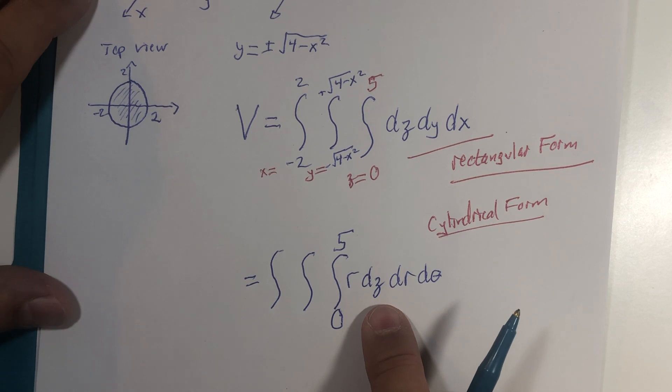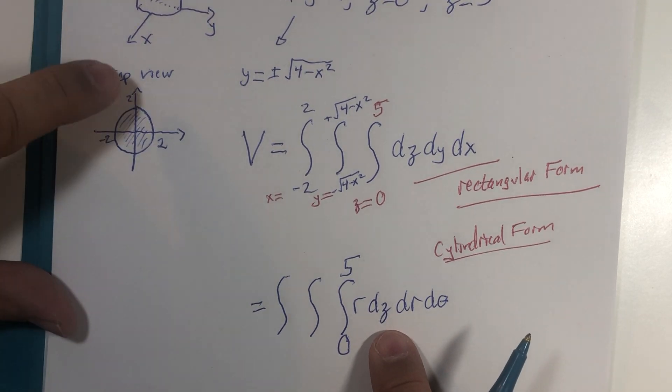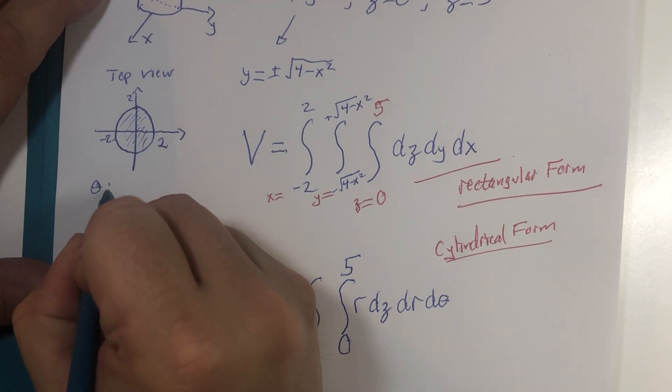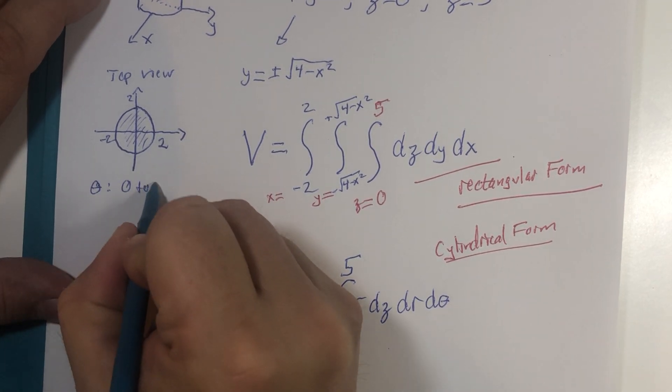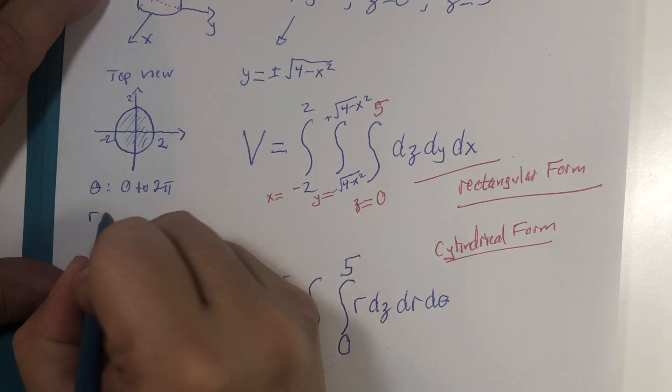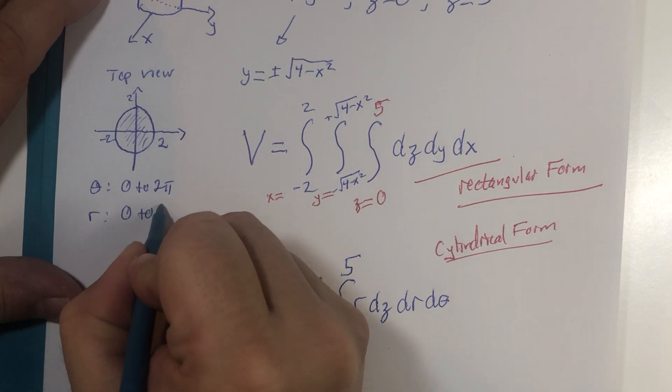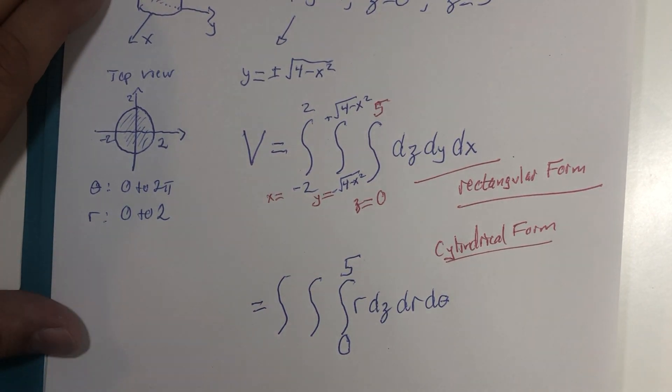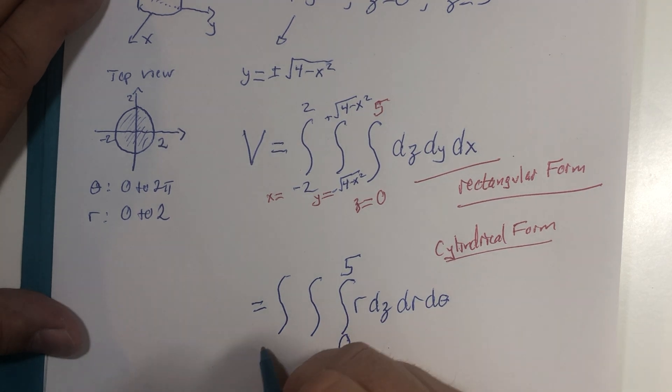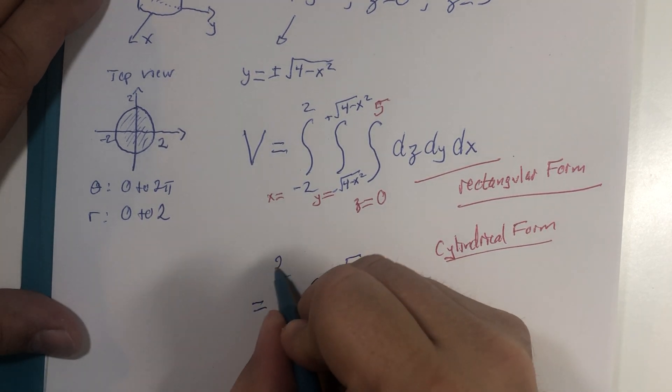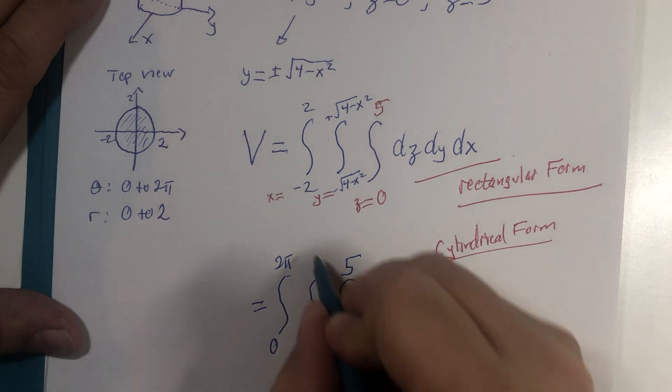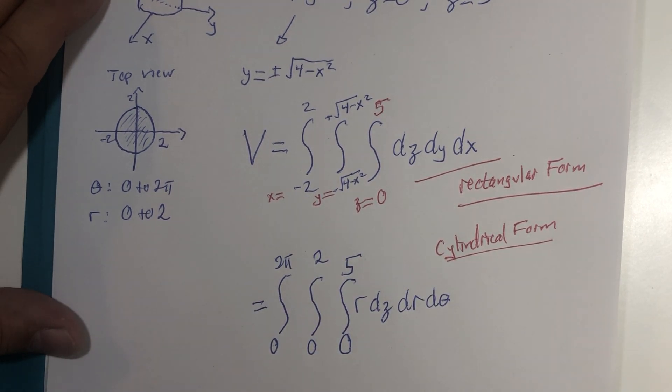But now when we look at this visually, that circle integral tells us that theta is zero to two pi and r is zero to two, both constants in the world of circles. Zero to two pi, zero to two.